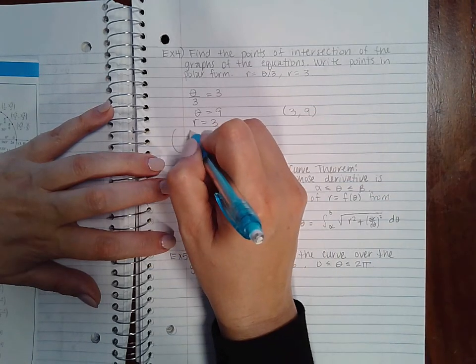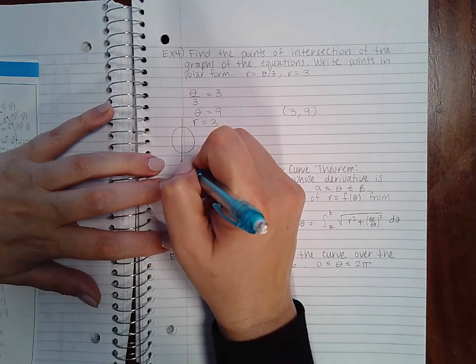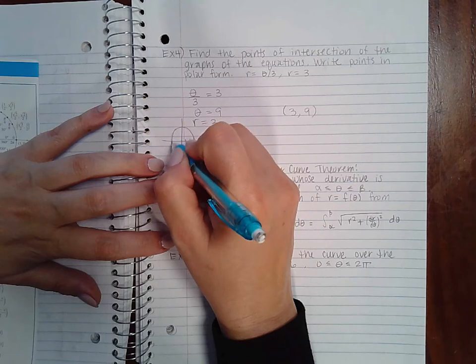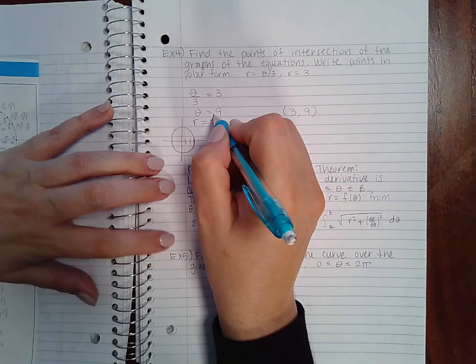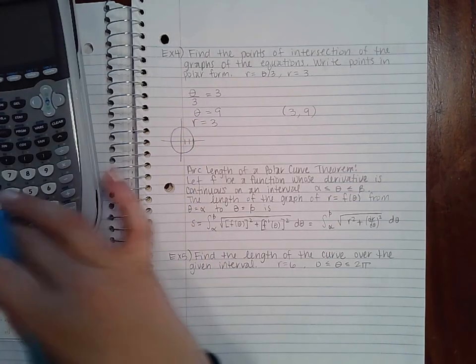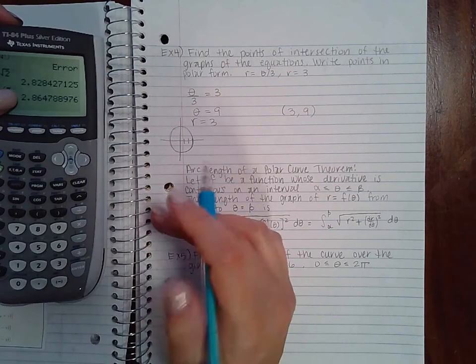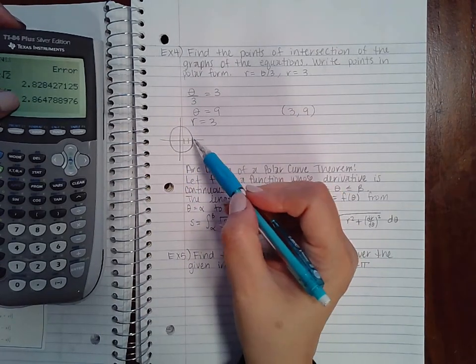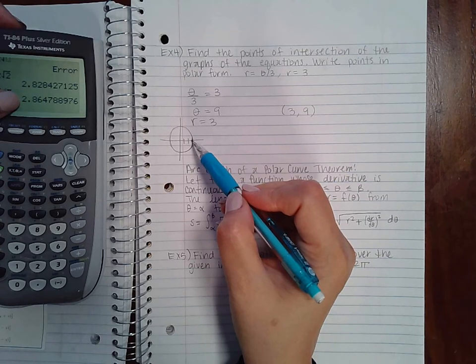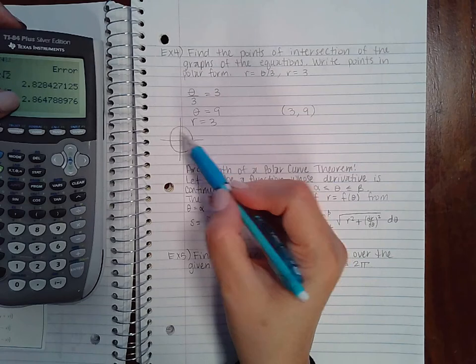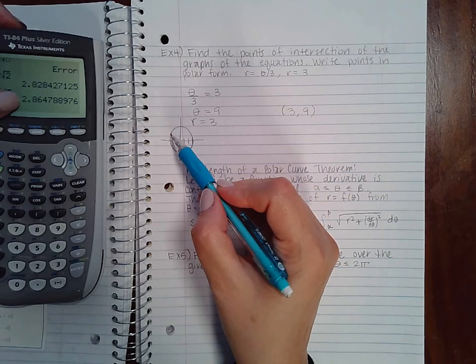Remember that nine goes all the way around. So here's your radius of three, which is an eccentric circle going this way, and your theta is nine. Nine divided by pi is like 2.8 pi. So it's like one whole way around two pi and then a little bit less than one pi. So it's about right here.